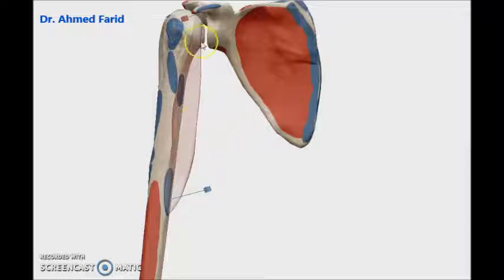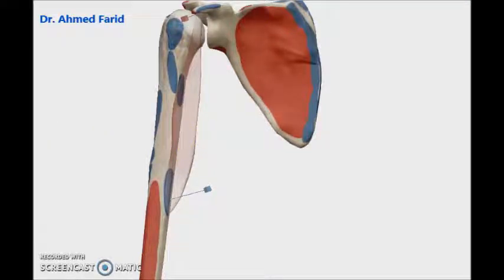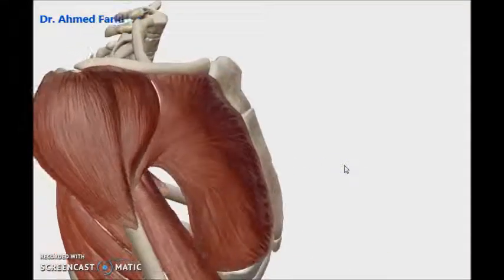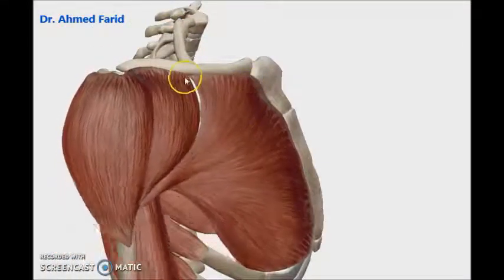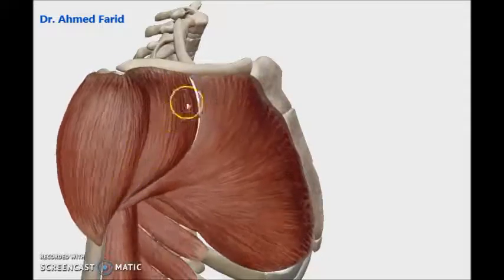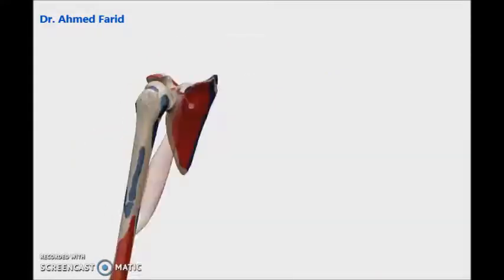The action of this muscle will be on the shoulder joint, because it only crosses the shoulder joint — so it will move the humerus at the shoulder joint. Applying the rule: it crosses anterior to the shoulder joint, so the main action of coracobrachialis will be flexion of the arm at the shoulder joint. Any muscle that crosses anterior to the shoulder joint will perform flexion of the arm at that joint.